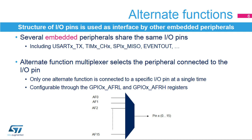Several integrated peripherals, such as the USART, timers, SPI, and others, share the same I/O pins in order to interface with the external environment. Peripherals are configured through an alternate function multiplexer, which ensures that only one peripheral is connected to an I/O pin at a single time. This selection can be changed during runtime of the application through the GPIOX AFRL and AFRH registers.